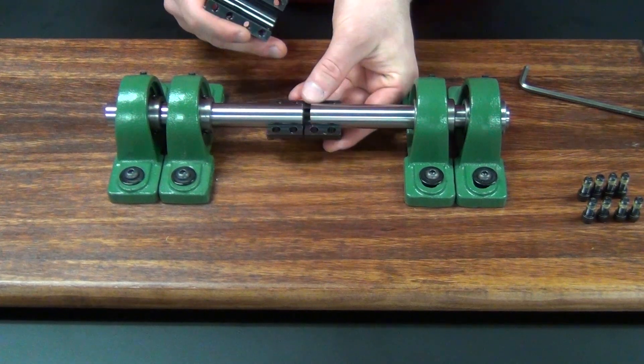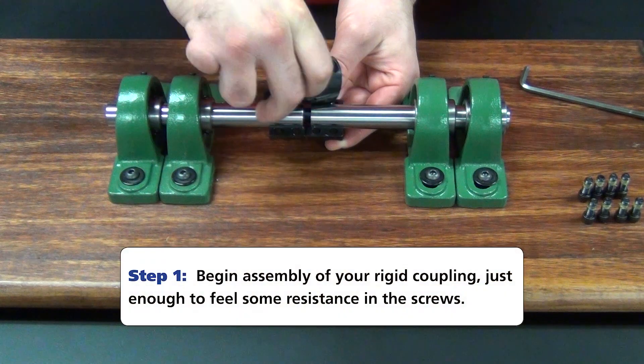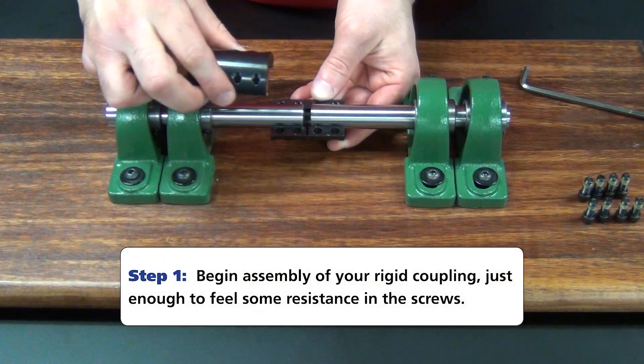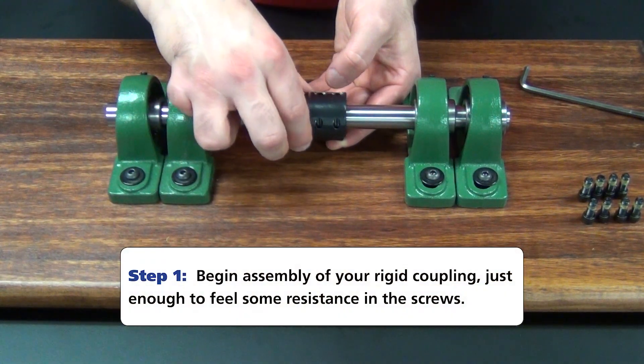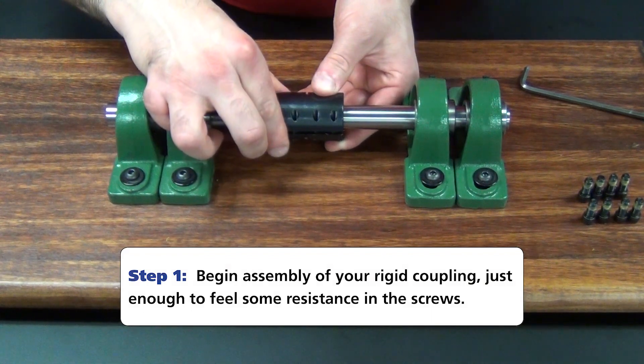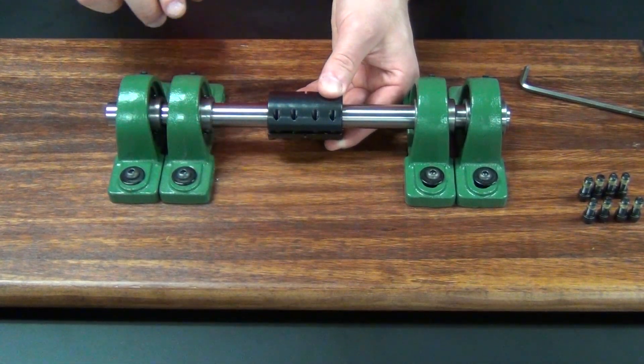I'm going to start by roughly installing my rigid coupling by hand using the eight screws that I've already taken off and a standard hex key, which in this case is 9/16ths.